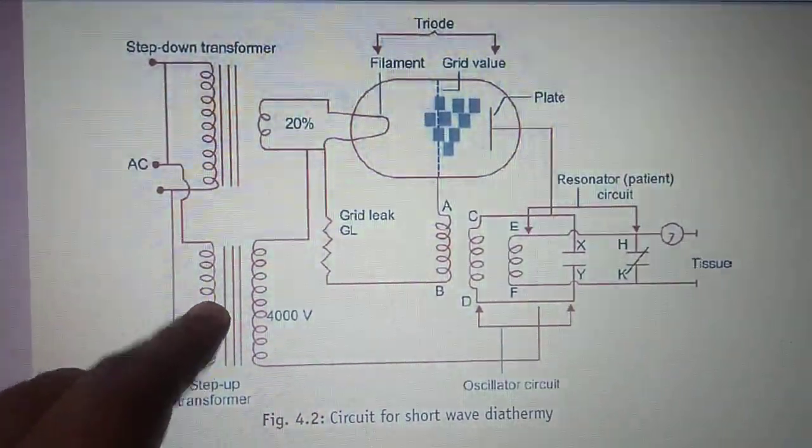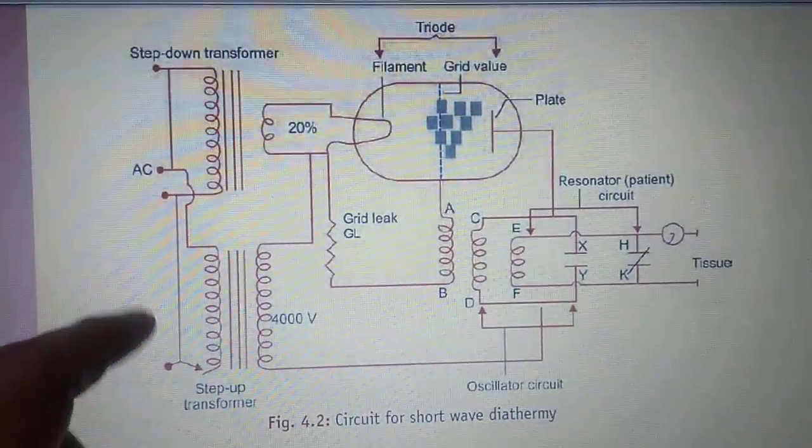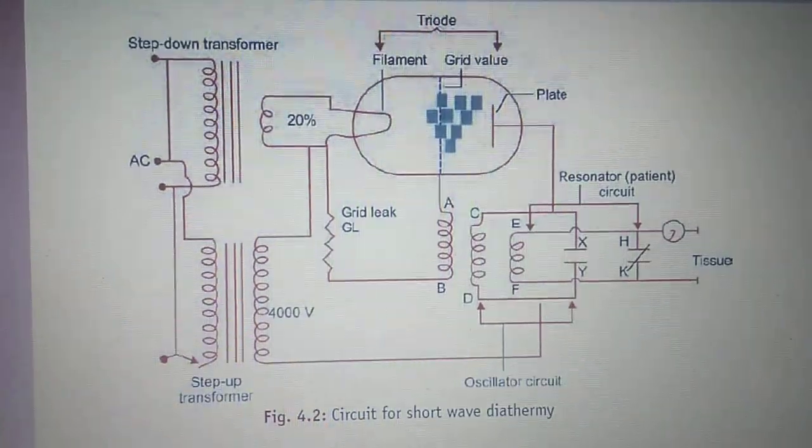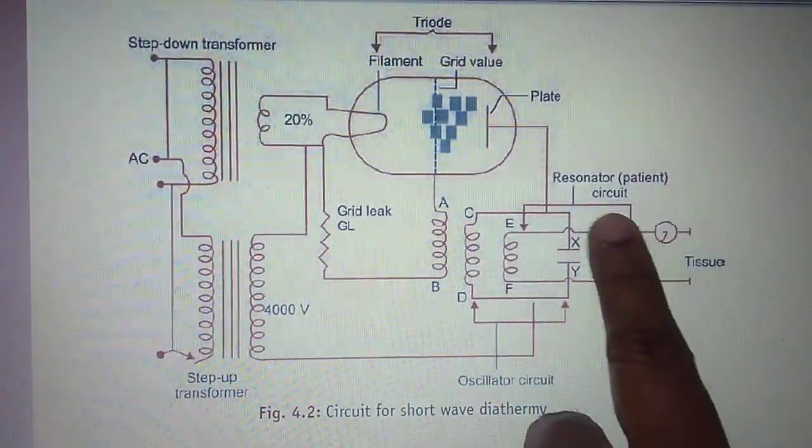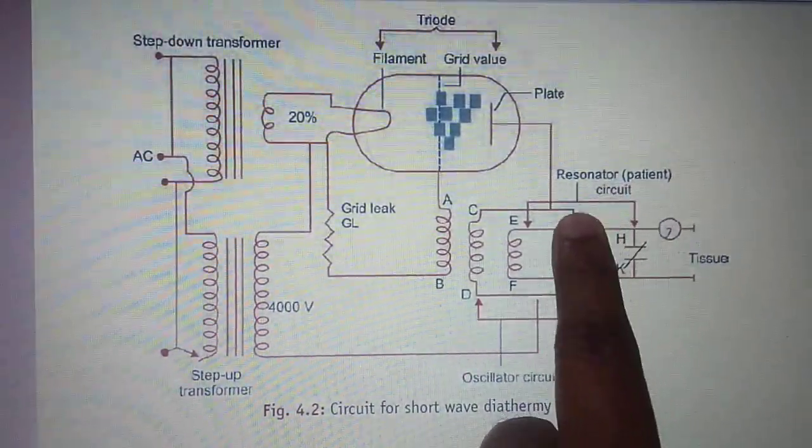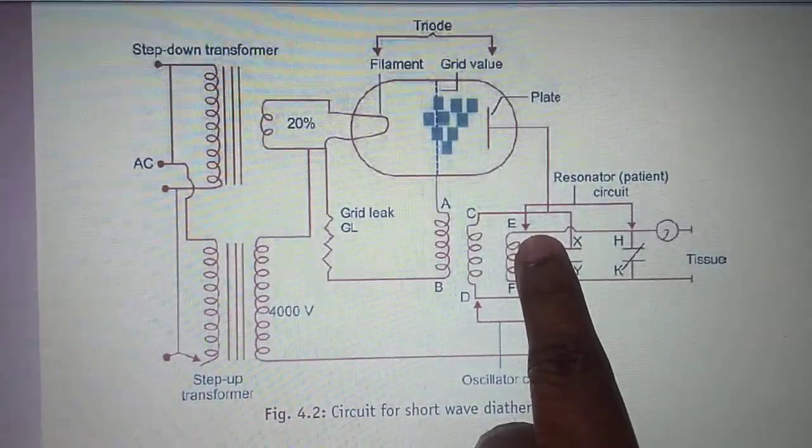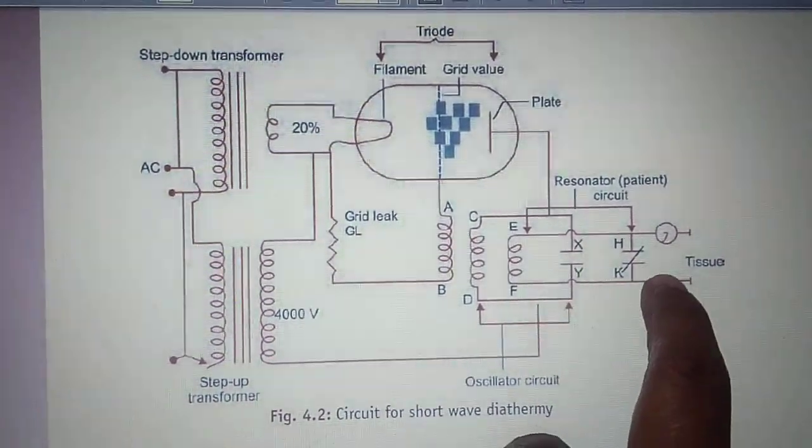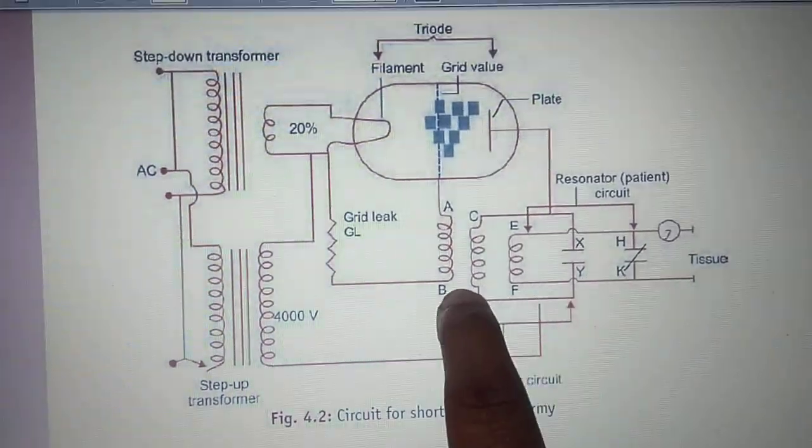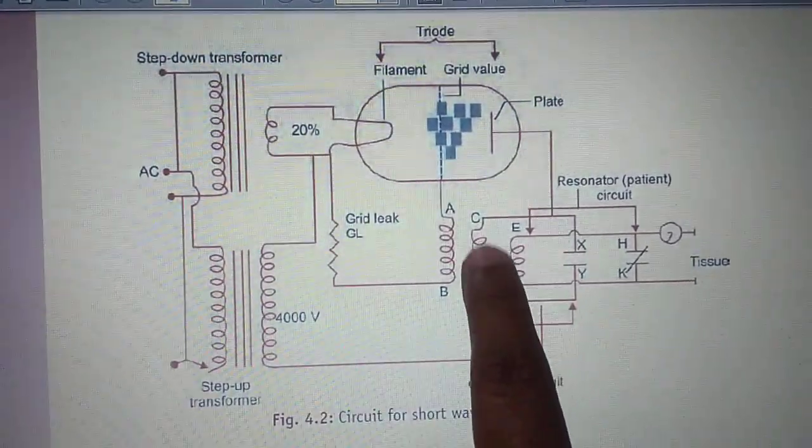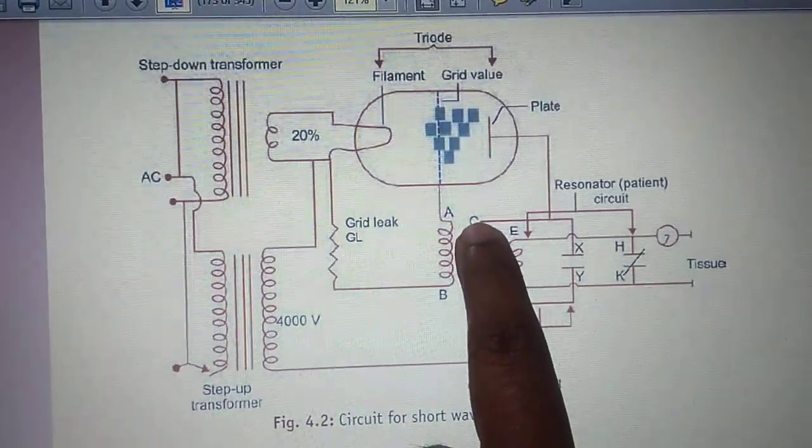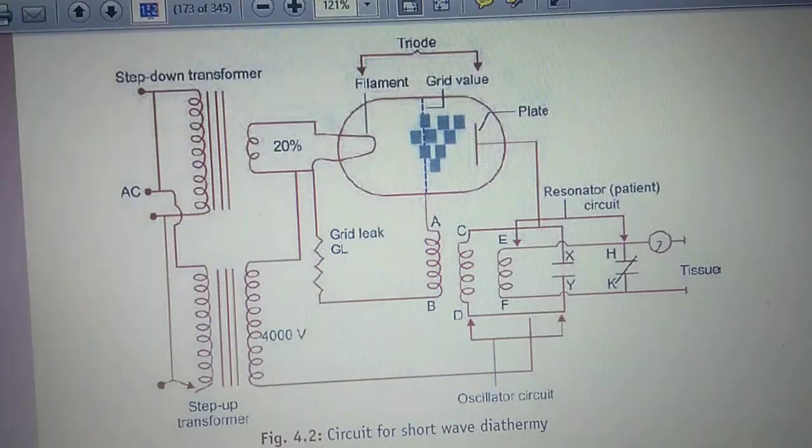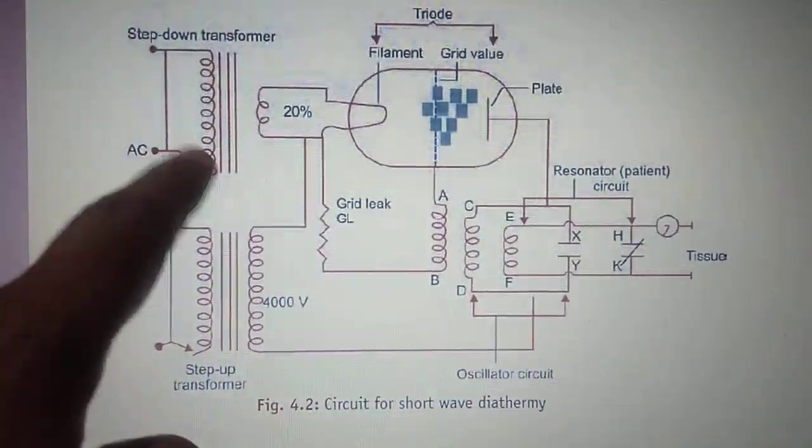One more important aspect of this circuit is the whole circuit is basically divided into two categories: one is machine circuit and one is patient circuit. This E and F coil area is the patient circuit, while the C and D coil area is the machine circuit.